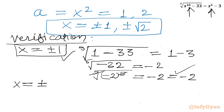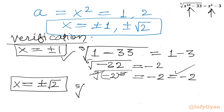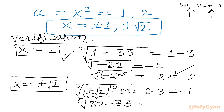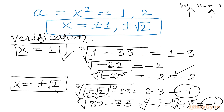For x equals ±√2: x to the power 10 = (±√2)^10 = 2⁵ = 32, and x squared = 2. LHS: 5th root of (32 minus 33) = 5th root of minus 1 = 5th root of (minus 1)⁵ = minus 1. RHS: 2 minus 3 equals minus 1. LHS equals RHS, so this is also verified.